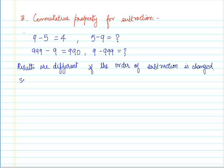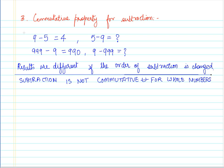As a result of this, we conclude that subtraction is not commutative for whole numbers. This is what we have got as a result.